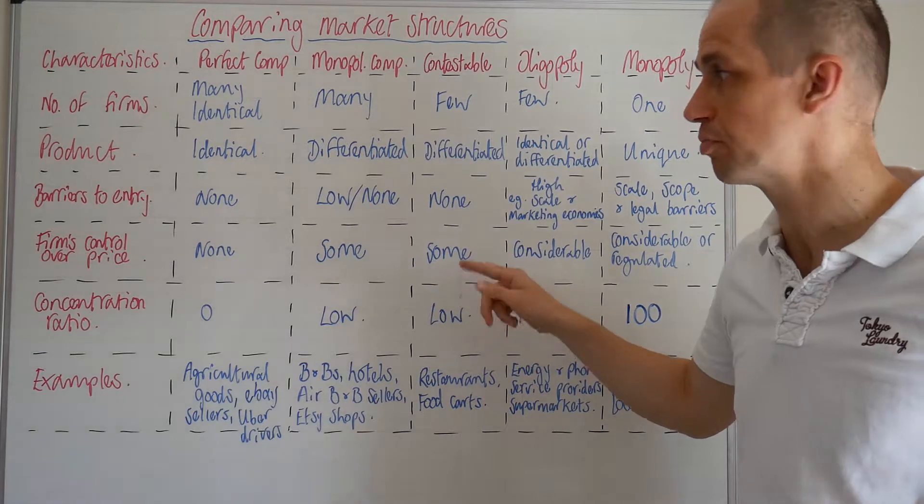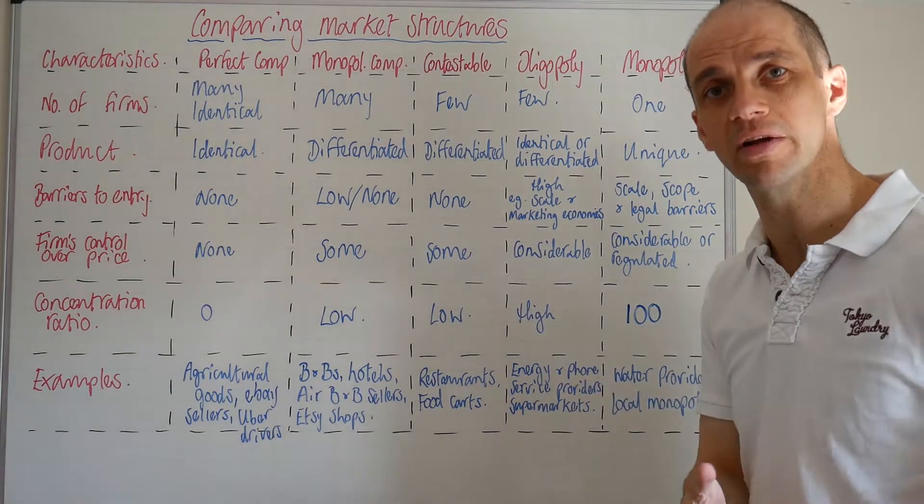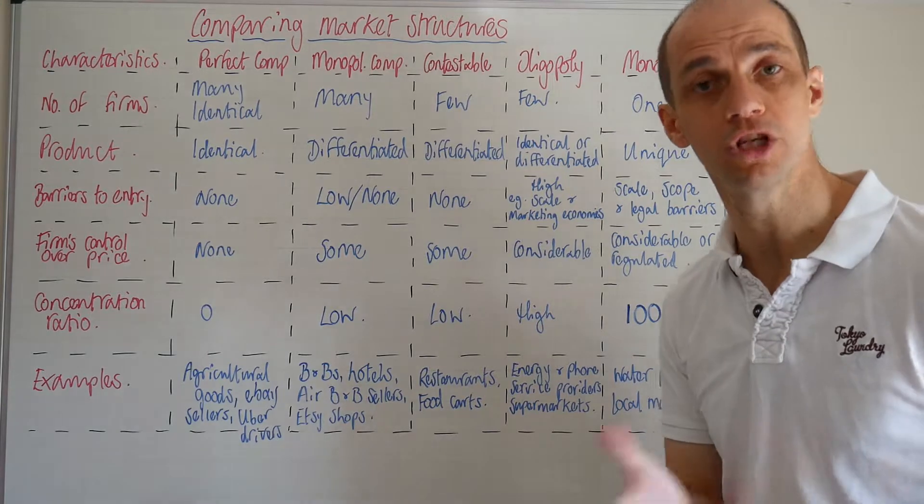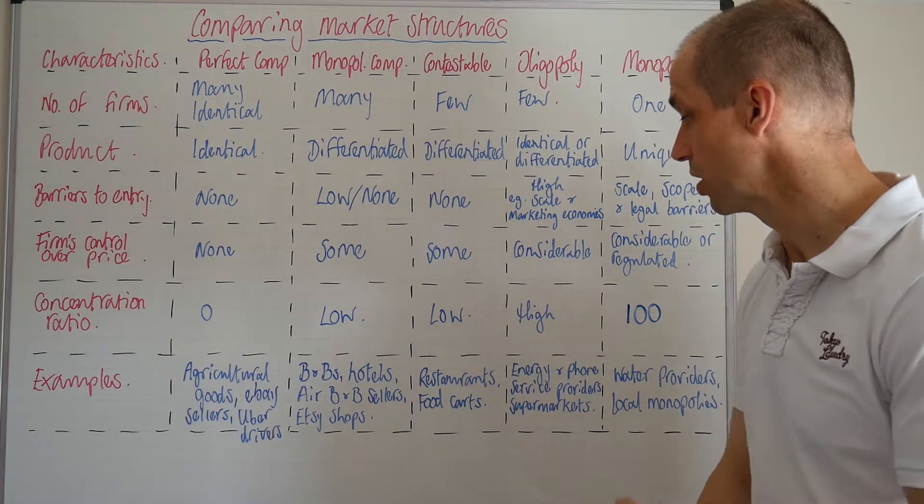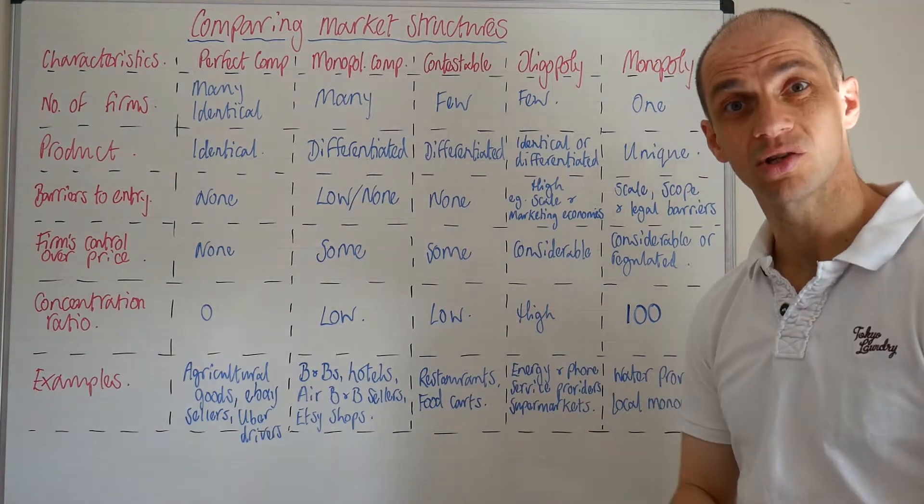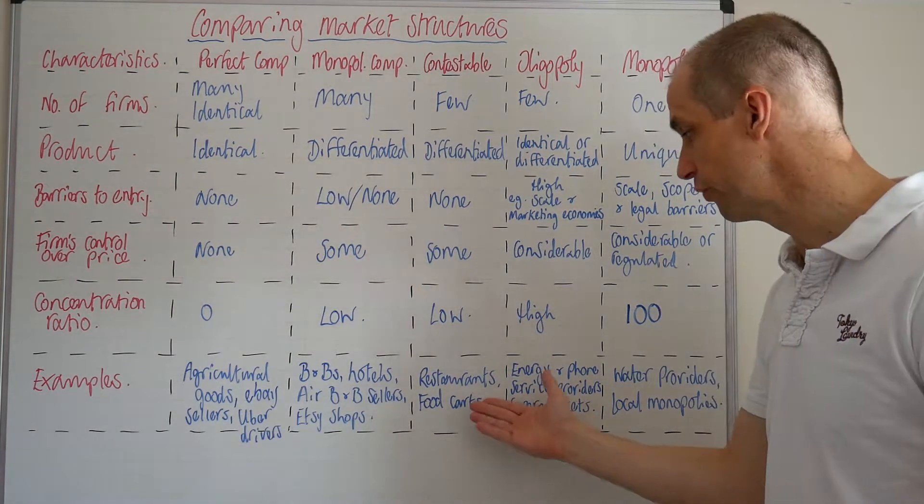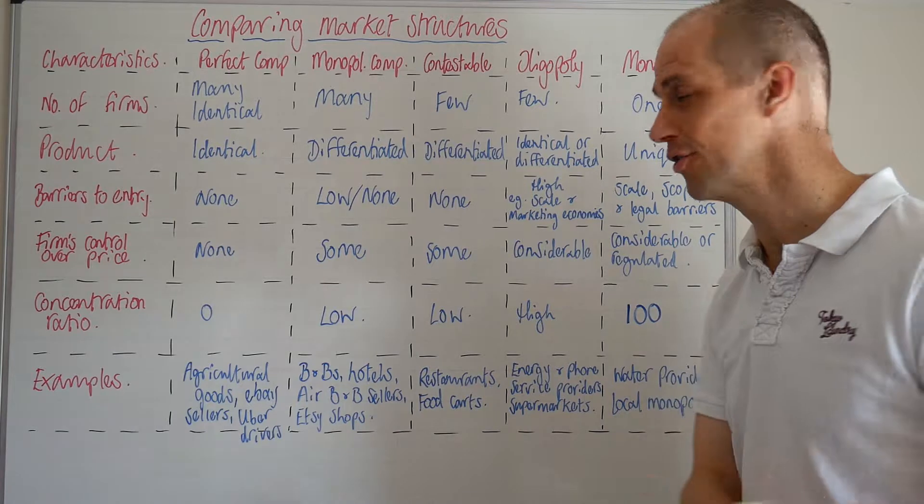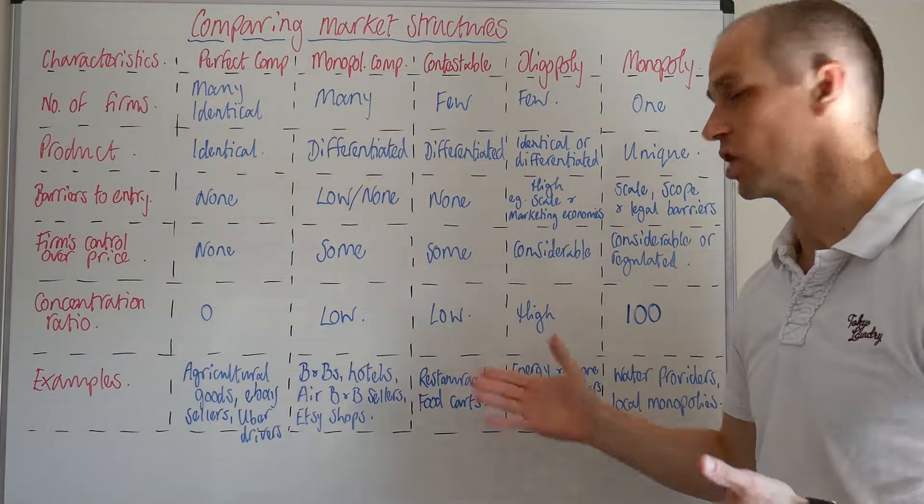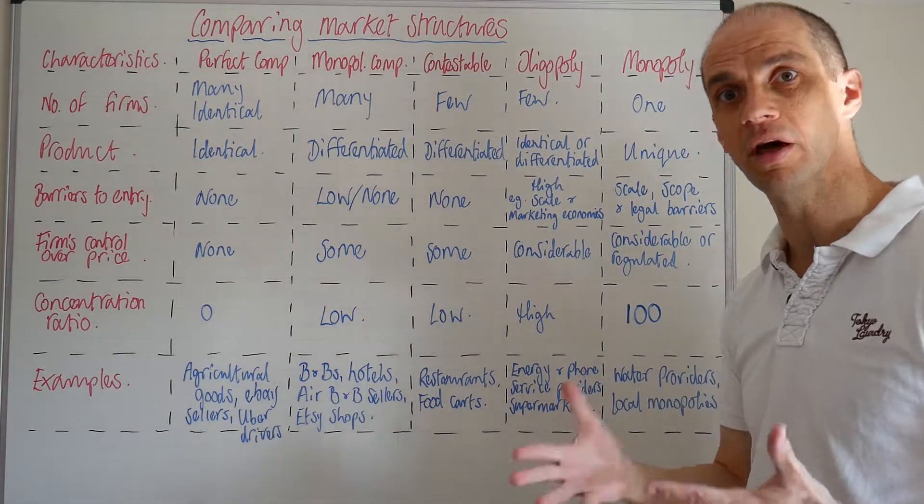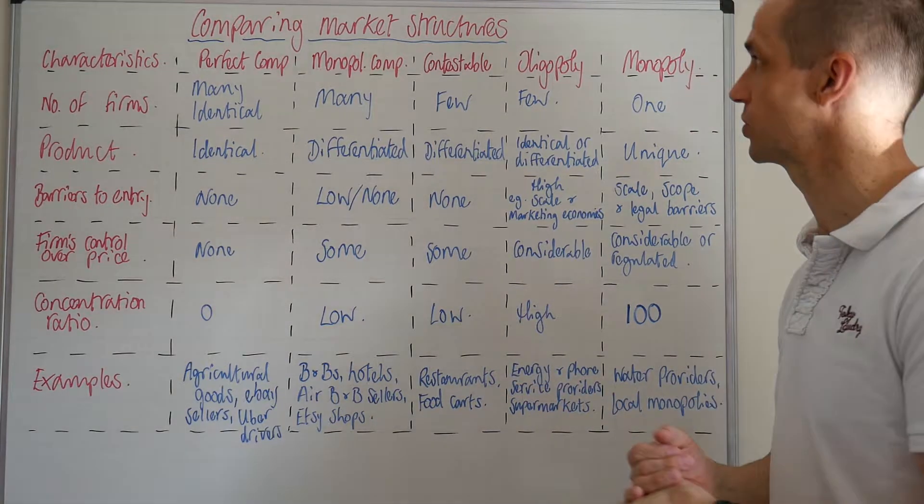The firm's control over price may be some degree of control. The concentration ratio is likely to be relatively low. So I've put down examples here as restaurants or possibly food stores or food carts, as they're known in the States. You can actually set up in those types of industry at relatively low costs.